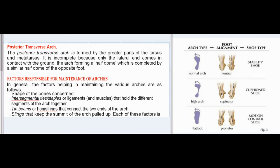Factors responsible for maintenance of arches: In general, the factors helping in maintaining the various arches are: 1. Shape of the bones concerned; 2. Intersegmental ties — ligaments and muscles that hold the different segments of the arch together; 3. Tie beams or hum springs that connect the two ends of the arch; 4. Slings that keep the summit of the arch pulled up.